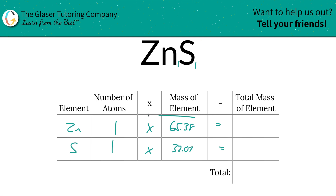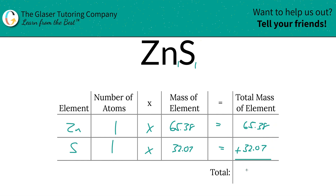Then we're going to find the total mass of the element in the compound by simply multiplying across. This is actually pretty simple in this problem because they're both ones, but you can use the same process in a problem that doesn't have a subscript of one. The total mass of the entire compound is just simply the summation of those individual element masses, which gives us 97.45. That was the first step of the process to find the total mass.